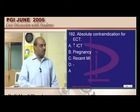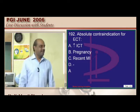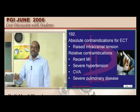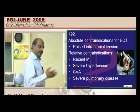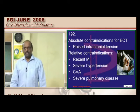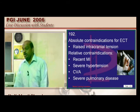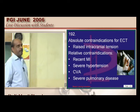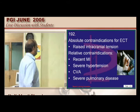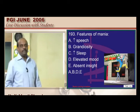Pregnancy is not a contraindication for electroconvulsive therapy — that is the carry-home message, a frequently tested topic. There are definite indications for ECT in pregnancy, for example a woman with psychiatric depression who becomes pregnant and moves towards suicidal tendency must be rescued. Raised intracranial tension is an absolute contraindication, but recent MI, severe hypertension, CVA, retinal detachment, phaeochromocytoma, and severe pulmonary disease are only relative contraindications.